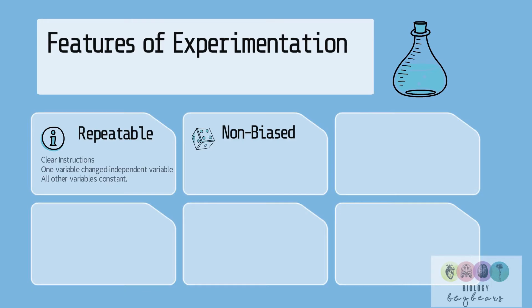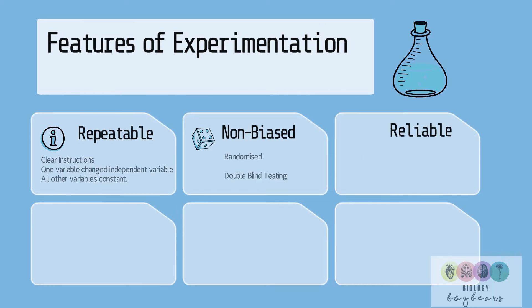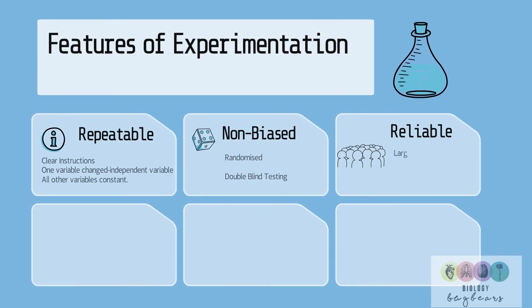For example, if doing drug testing, ensure you randomize — get a computer to select who gets what drug — and use double blind testing, where neither the testee nor the tester know who gets what. Good experiments are reliable. To ensure this, have a large sample size and use many replicates, or repeats.